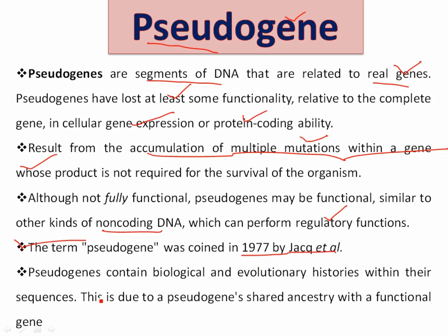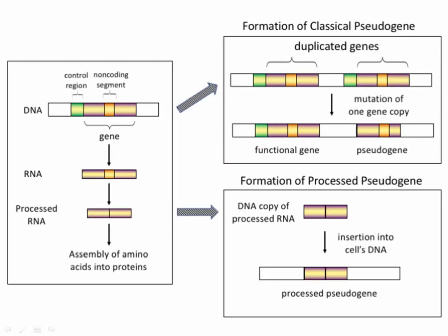This can come as a question in any exam: the term 'pseudogene' was coined in 1977 by Jacq. Pseudogenes contain biological and evolutionary history within their sequence. This is because pseudogenes share ancestry with a functional gene. Since they are related to functional genes, they contain some biological and evolutionary history within their sequence, as gene expression occurs through transcription to RNA and translation to protein.